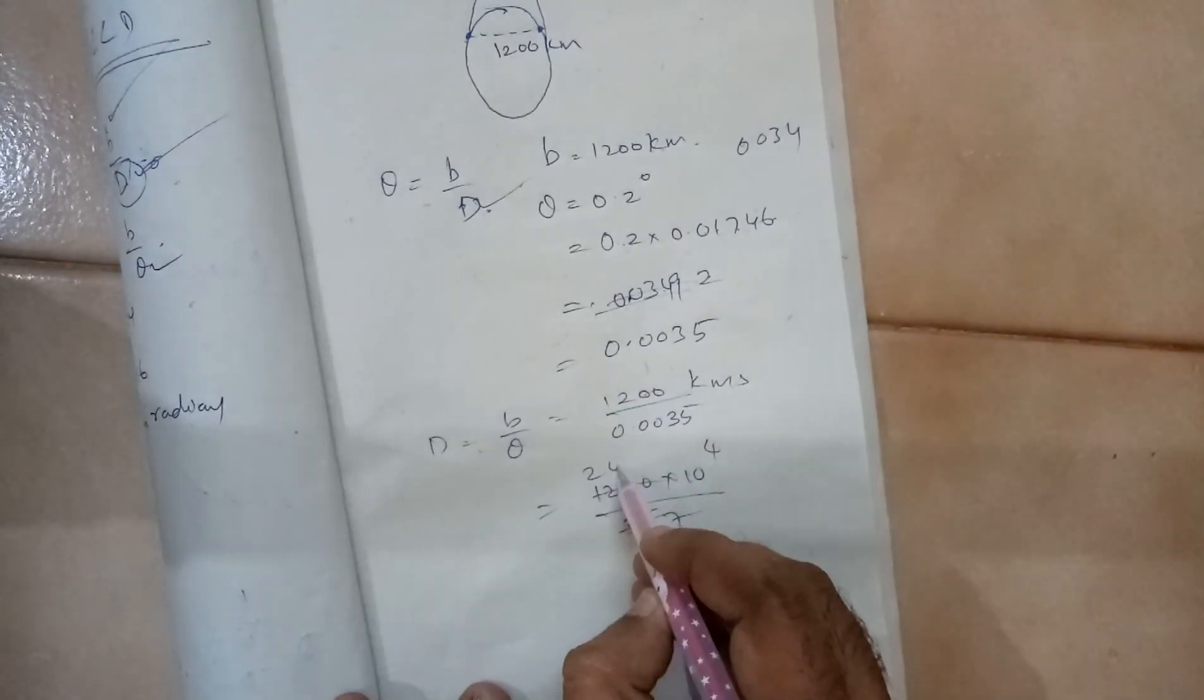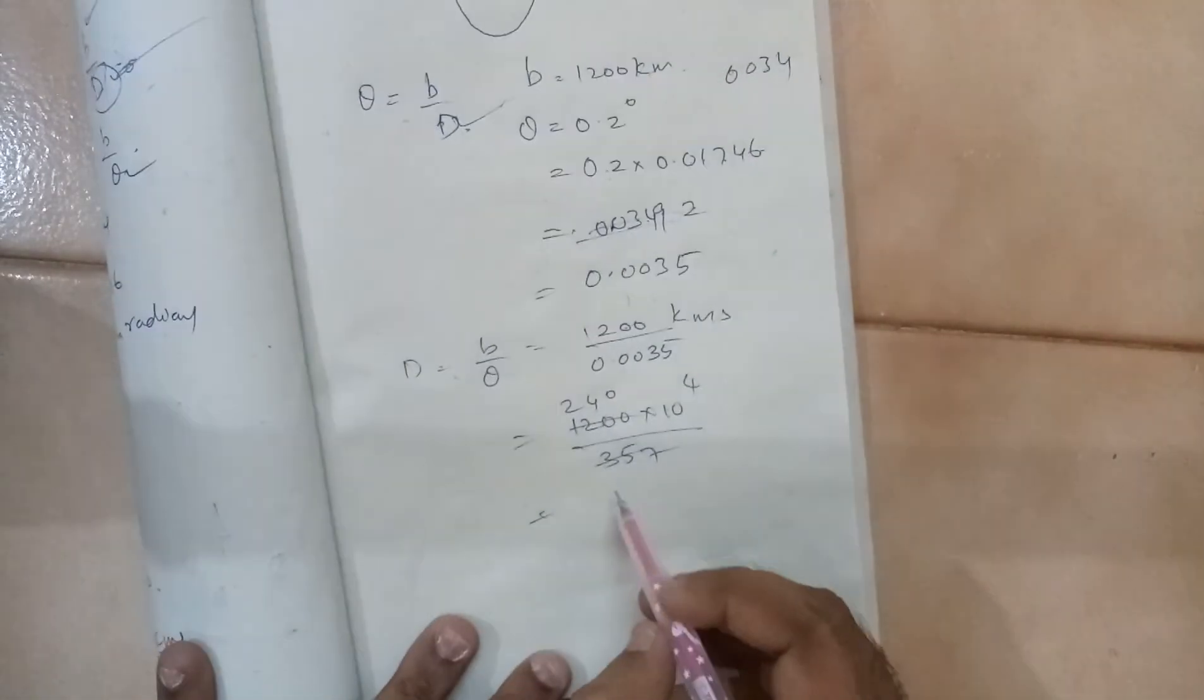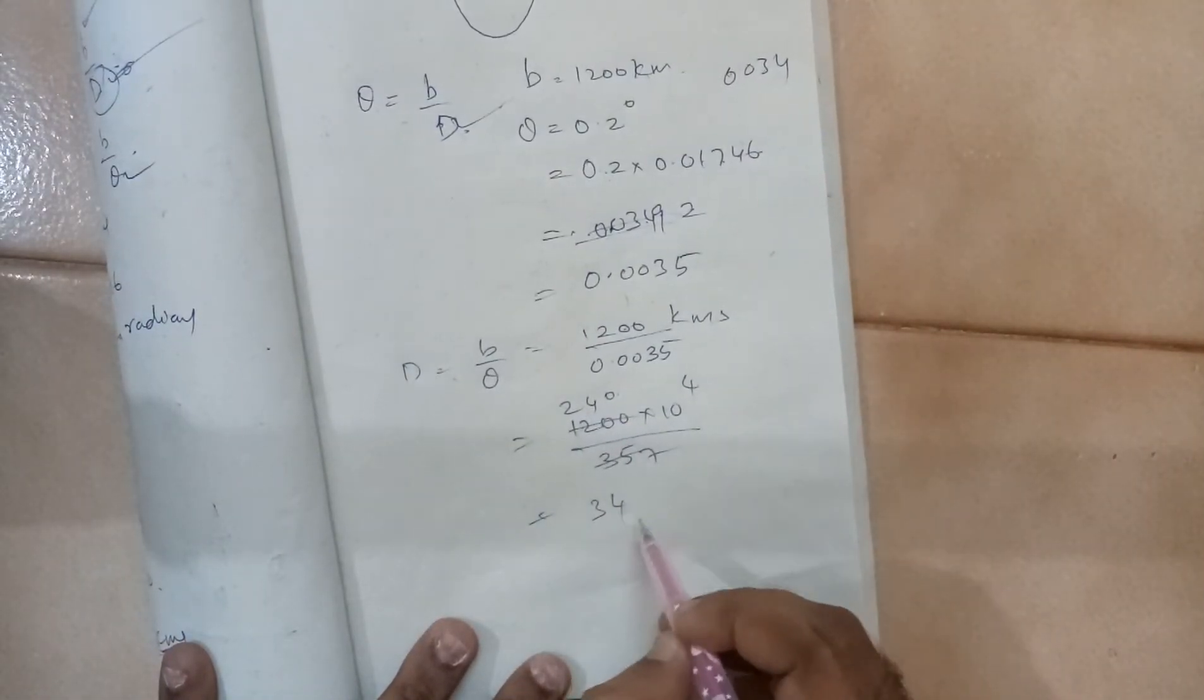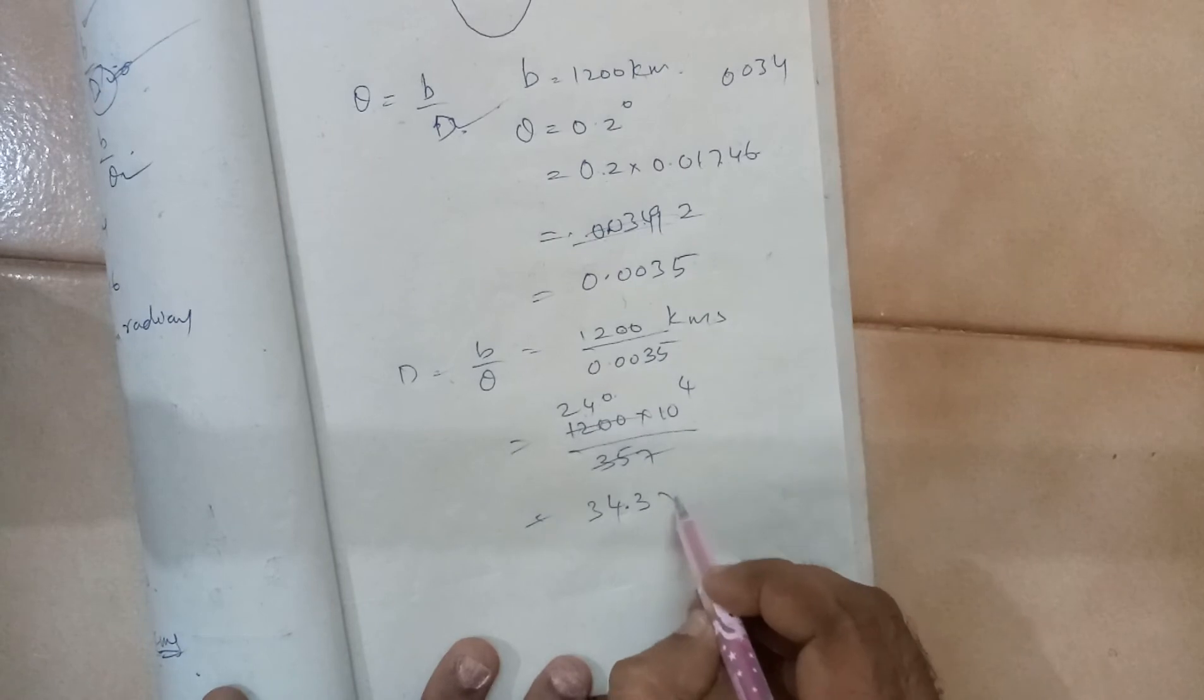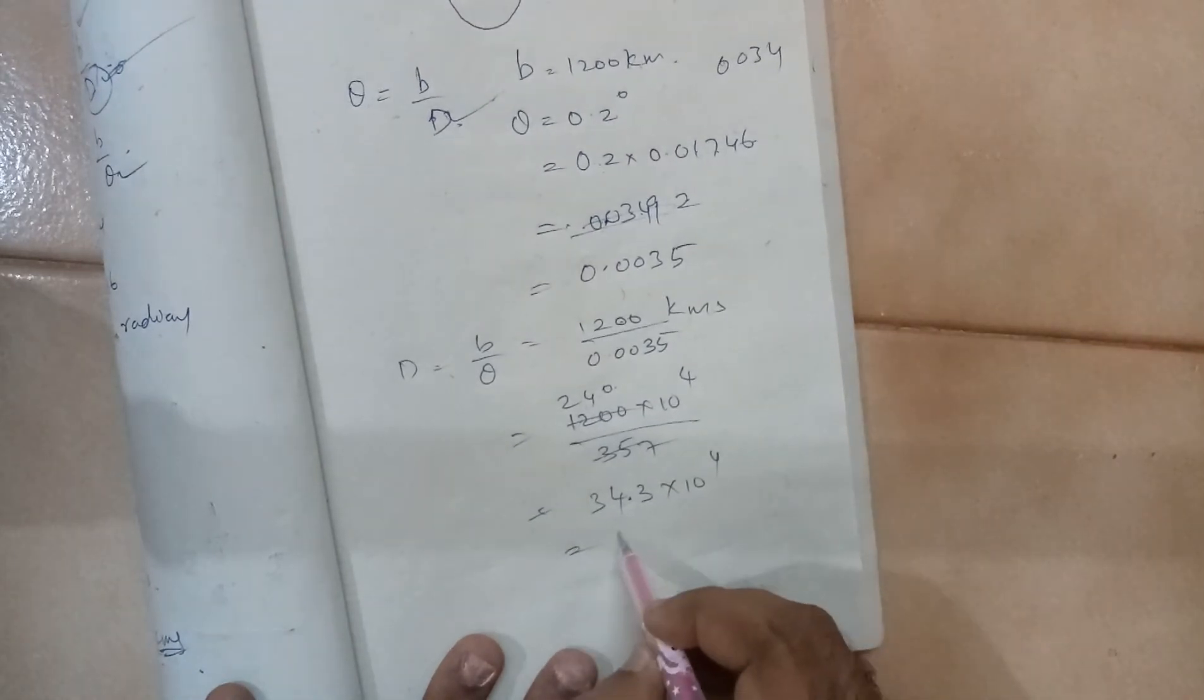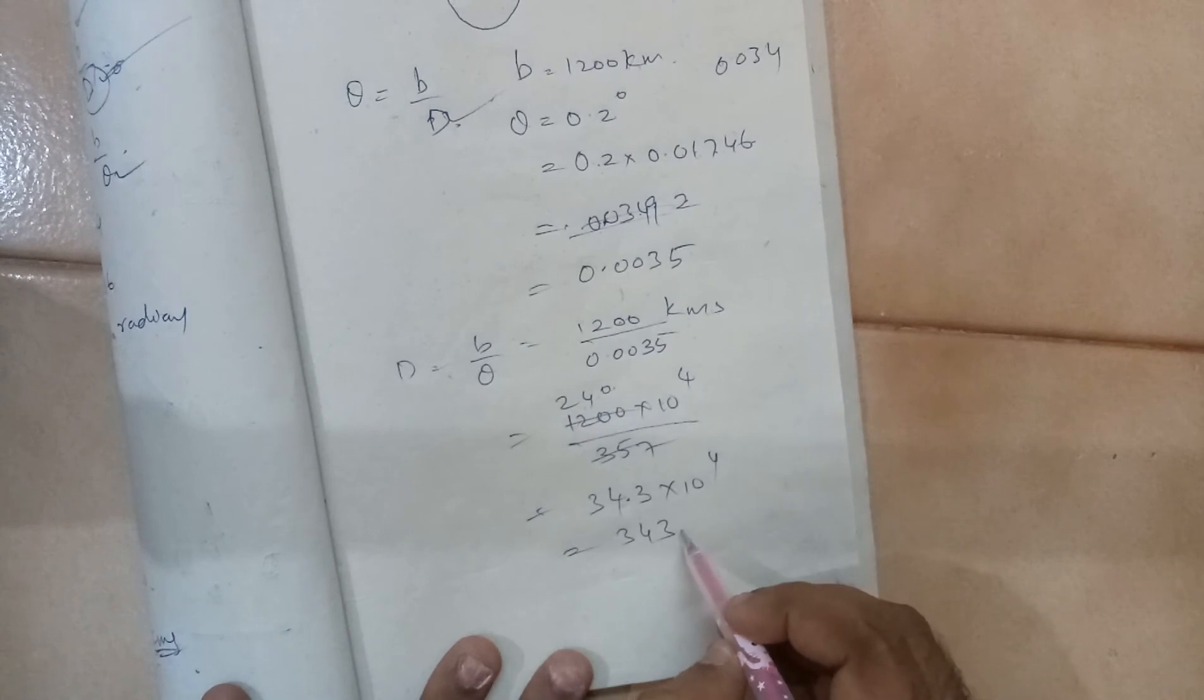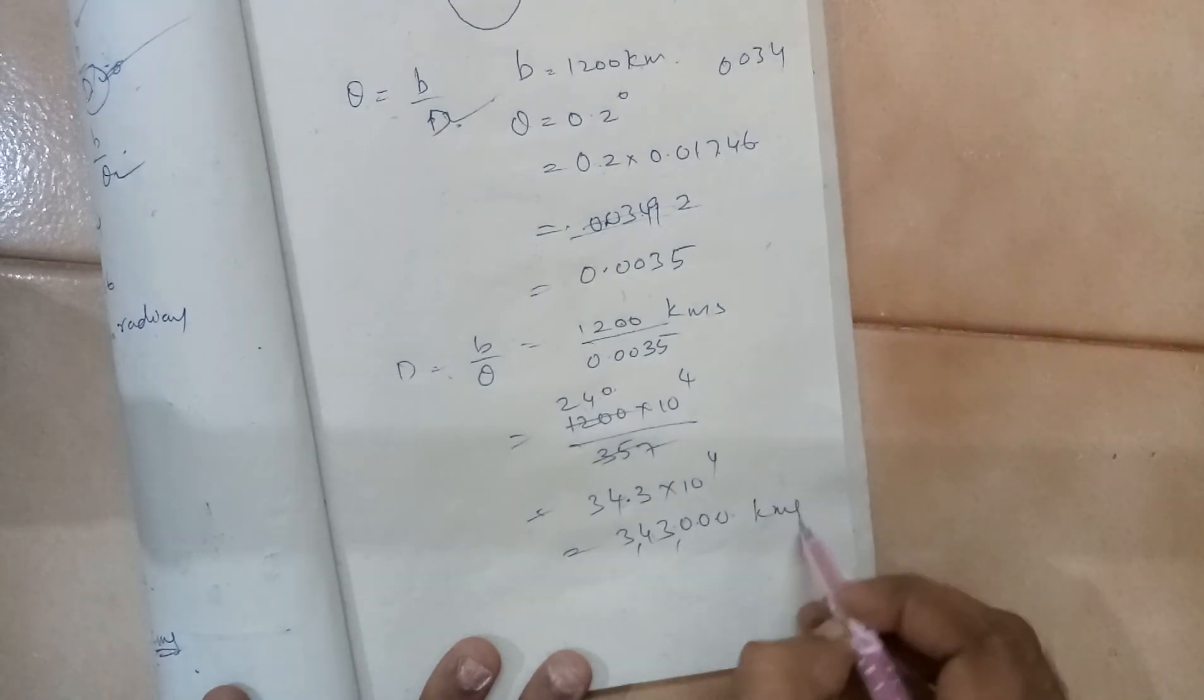Performing the division: 5 times 7 is 35, 5, 24, 0. So it is 3s are 21, 30, 4, 20. So 34.3 into 10 to the power of 4, or 343 and 1, 2, 3, 1, 2, 3, 4. So it is 343,000 km.